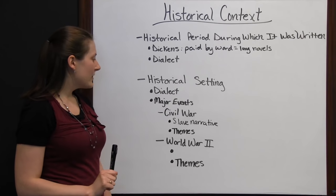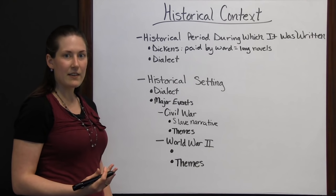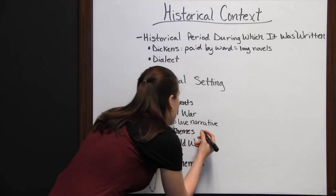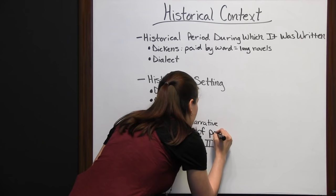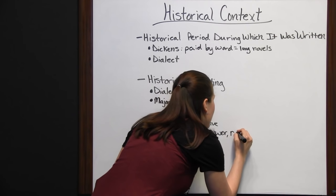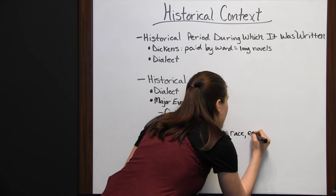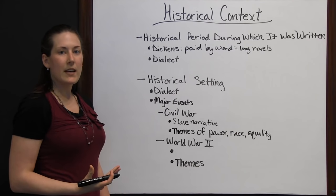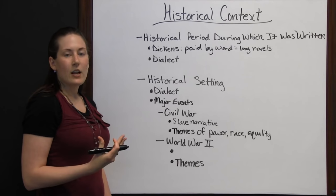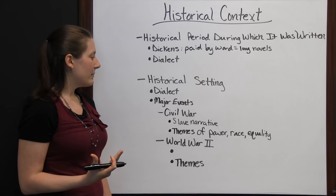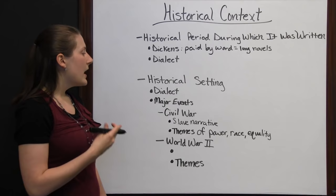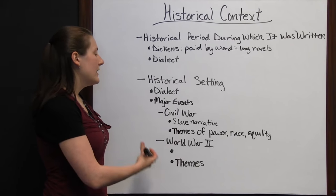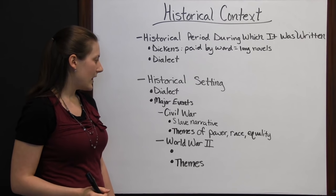With Civil War writings and slave narratives, pay attention to the themes. A lot of times you'll see themes of power, race, and inequality. When slavery ended, people were saying that skin color doesn't make you more or less of a person — everyone's equal. While equal rights didn't come about until later, it started that theme of equality around the Civil War time.